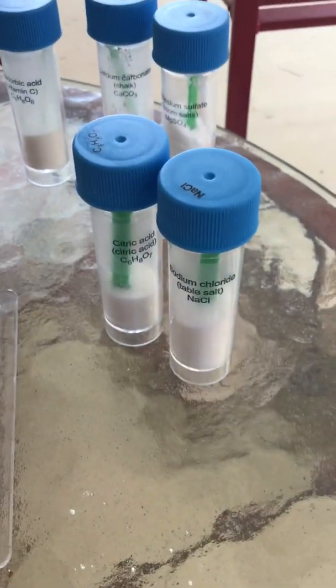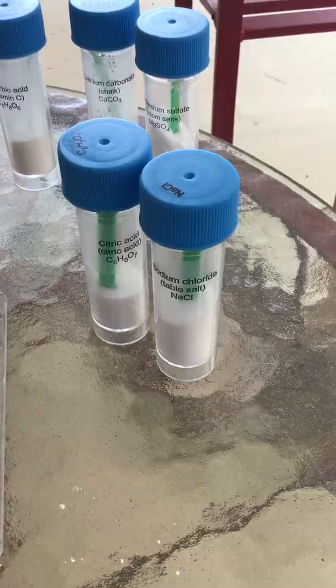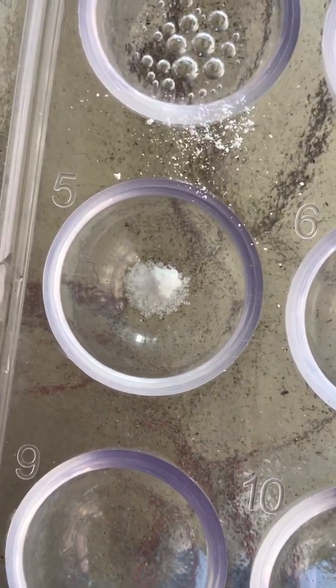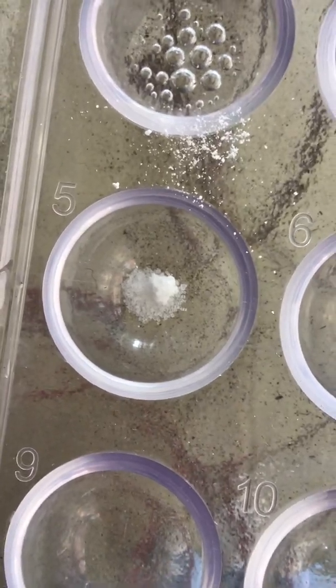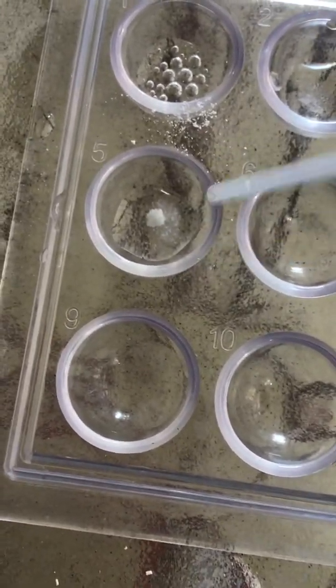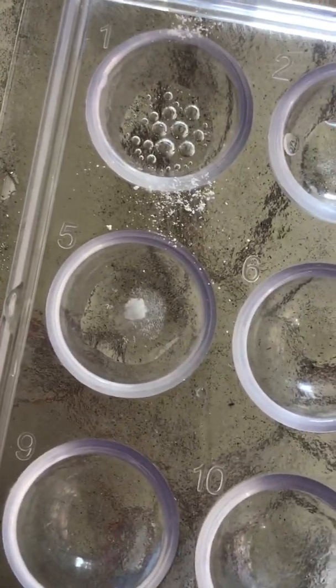In well five, I'm going to try citric acid and sodium chloride. Once again, crystal-like and clumpy powder. Let's see what happens when I add water. Doesn't really look like anything's happening.